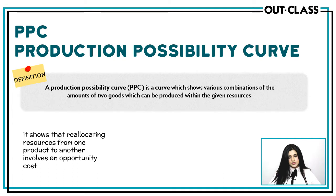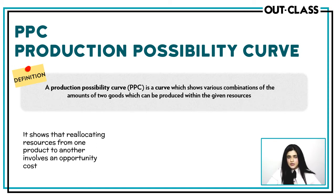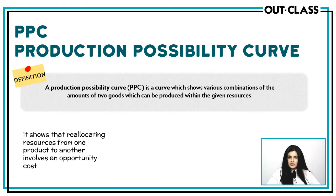Production Possibility Curve — this is a very important concept. You must expect at least a couple of MCQs and definitely a structured question on this. A production possibility curve is a curve which shows all possible combinations of output that you can produce of two goods within your given budget or your given set of resources.